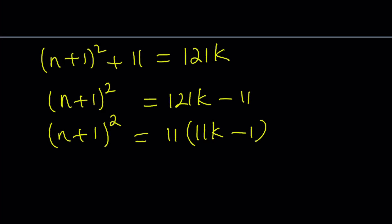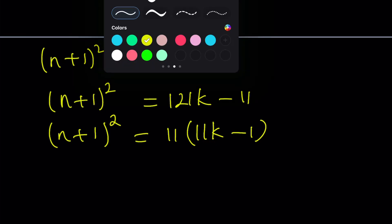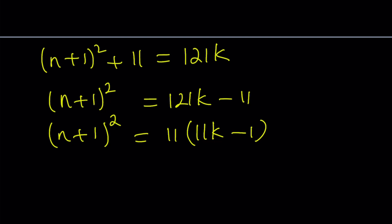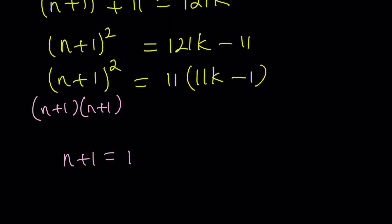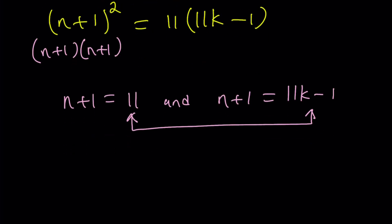We can do the following. n plus 1 squared is n plus 1 times n plus 1. And obviously 11 is a prime number. So we can basically say that from here since the left hand side can be written as n plus 1 times n plus 1, from here we can say that n plus 1 is 11 and n plus 1 is 11k minus 1. And from here we can basically set these equal to each other because they're equal to the same thing. So 11k minus 1 is equal to 11 which implies 11k equals 12 which implies k is equal to 12 over 11.